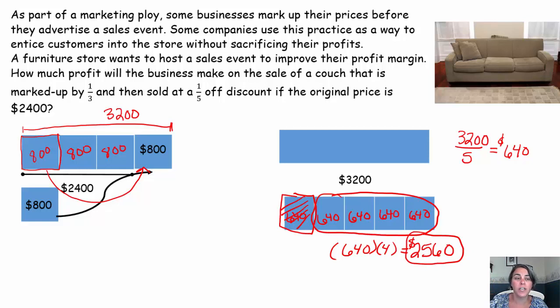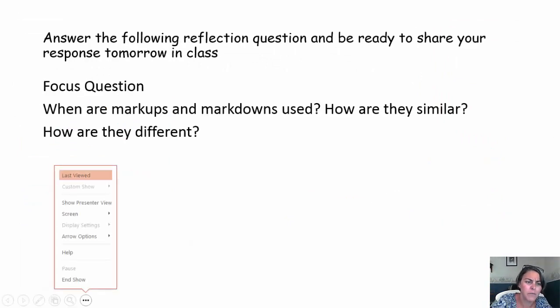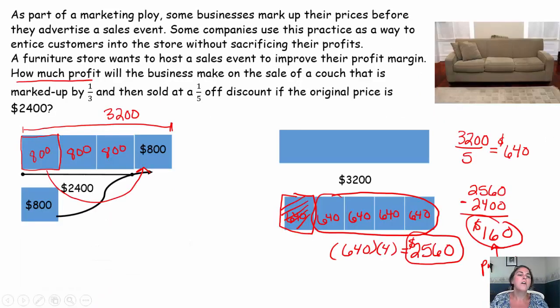So let's just make sure that we answered the question that was asked. How much profit will the business make on the sale of the couch? Oh, we need the profit. The profit will be what they sold it for and take away what they had to pay for the couch, which was $2,400. So even after they've put that couch on sale, they are still making $160 profit. So they're still making profit. That store is still making money off of you. So that's how we go about that problem.